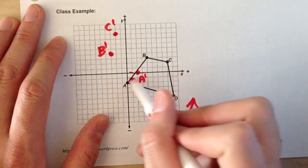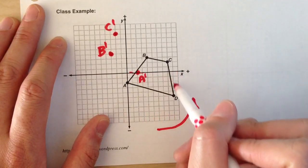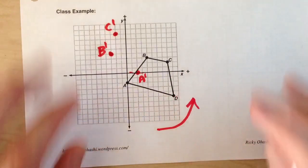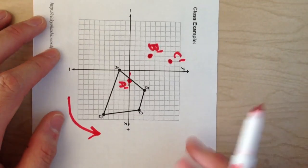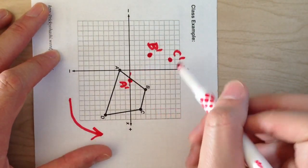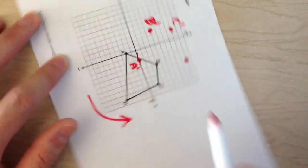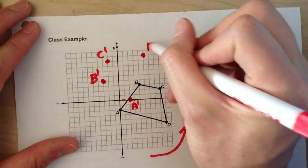D is going to be nine steps right, five steps down. Rotate my paper. Nine steps right, five steps down. That's D prime.